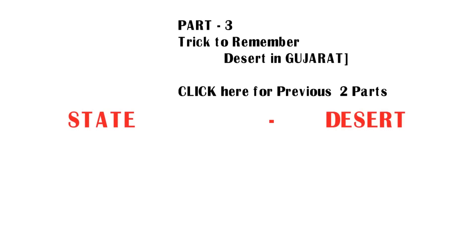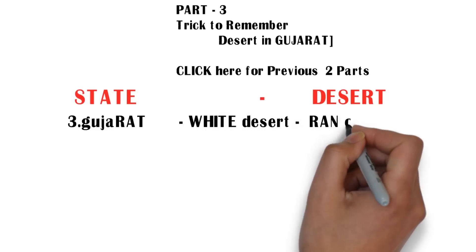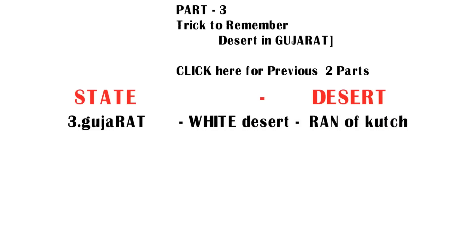Today we are going to see the state Gujarat. There is a desert in Gujarat called Rann of Kutch. It is also called the White Desert. This is a very important question asked in the RRB NTPC exam: which desert is called the White Desert? It is Rann of Kutch, and it is in Gujarat.